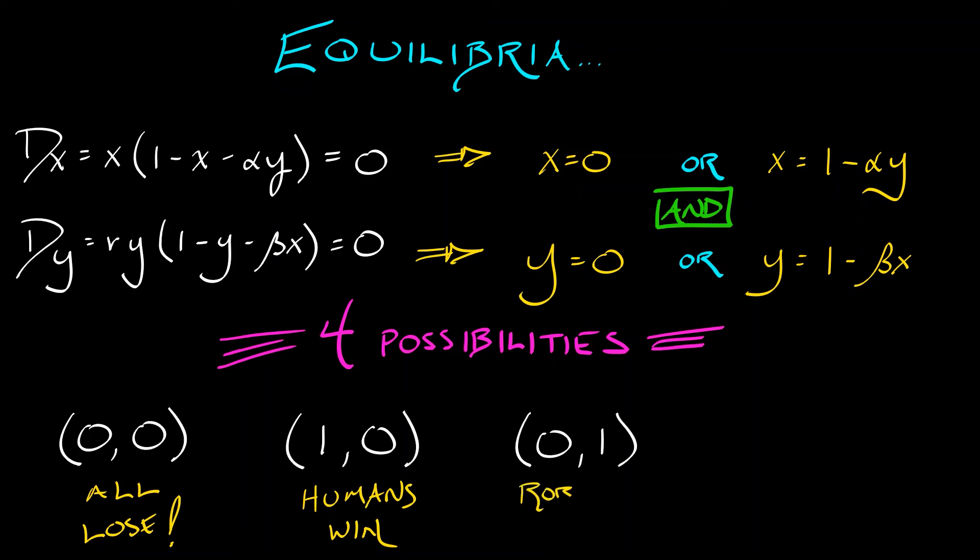The third and symmetric equilibrium to that is 0, 1. The robots have won, the humans have lost. And the fourth, the most interesting equilibrium occurs at X equals 1 minus alpha divided by 1 minus alpha times beta, and Y equals 1 minus beta over 1 minus alpha times beta. That takes a little bit of algebra, but I'm going to let you do.